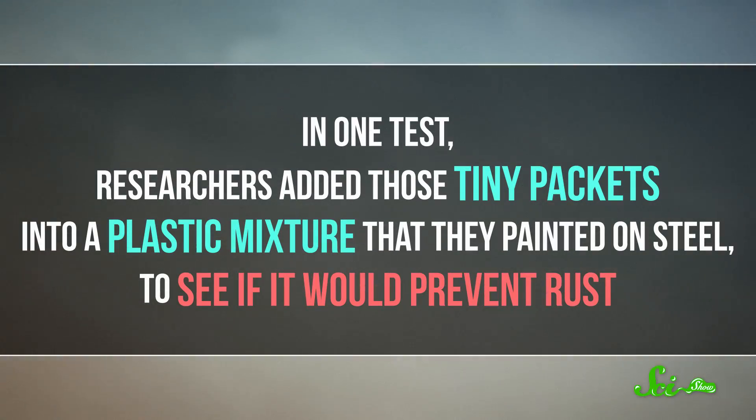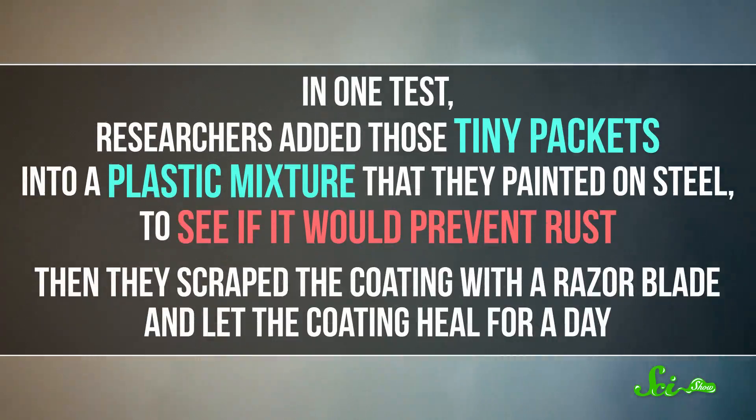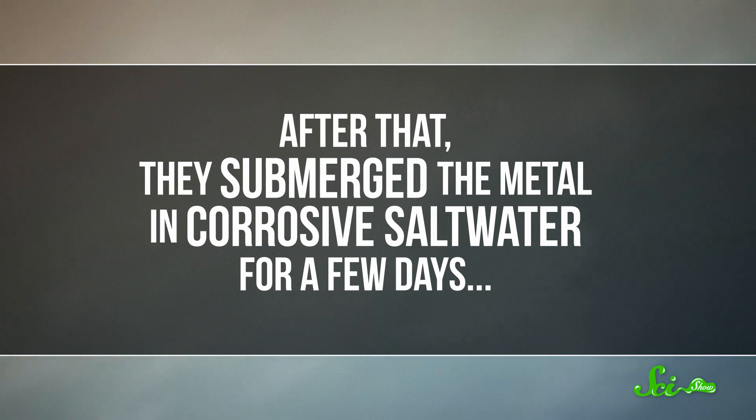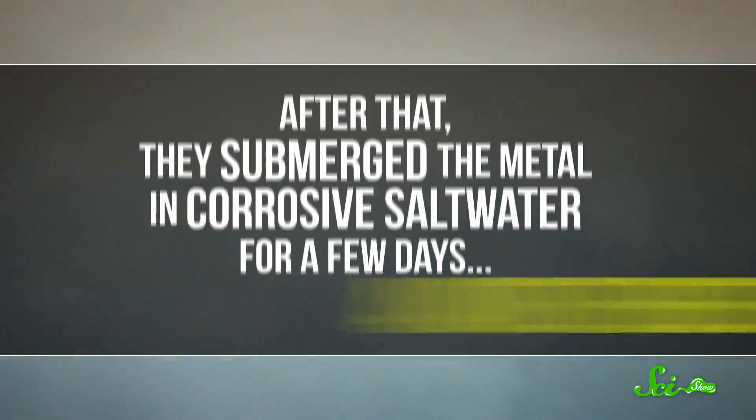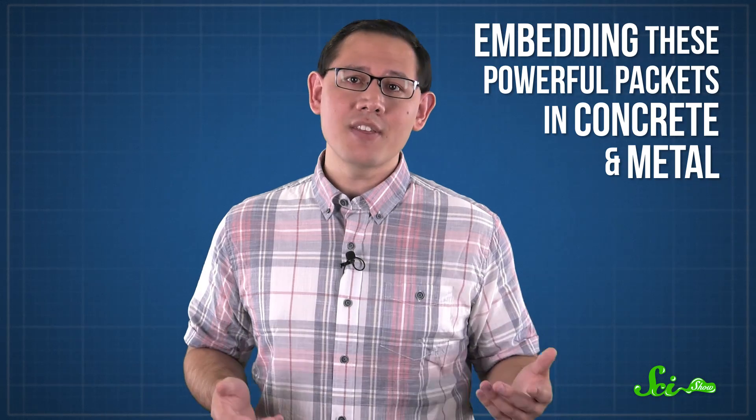Scientists have already used this technique to make a plastic coating that basically acts like self-healing paint. In one test, researchers added those tiny packets into a plastic mixture that they painted on steel, to see if it would prevent rust. Then they scraped the coating with a razor blade, and let the coating heal for a day. After that, they submerged the metal in corrosive salt water for a few days, and it emerged rust-free. Now, scientists are looking at putting this technology to work in other materials, embedding these powerful packets in concrete and metal, so that just about anything in your life can last longer and be safer to use.